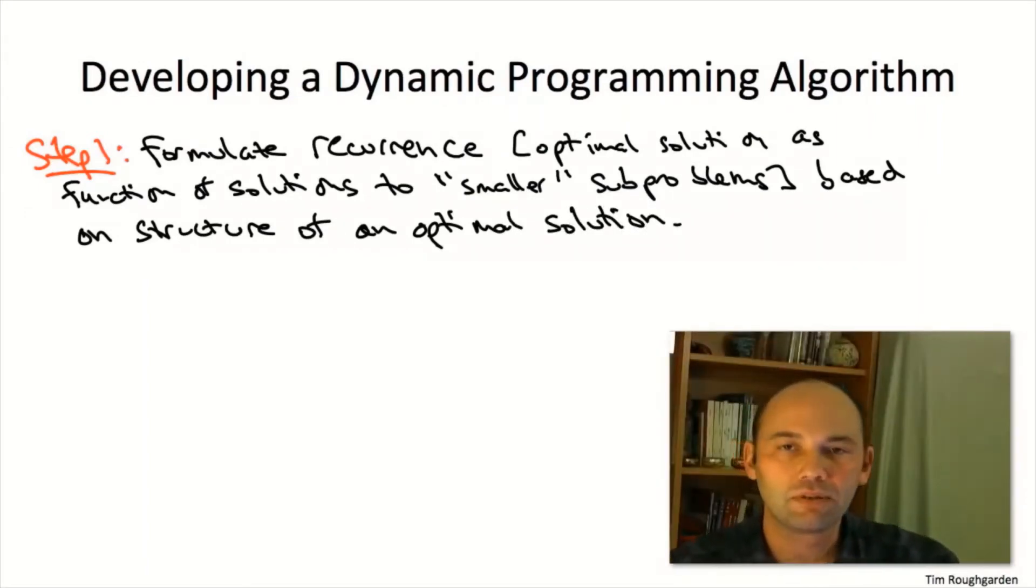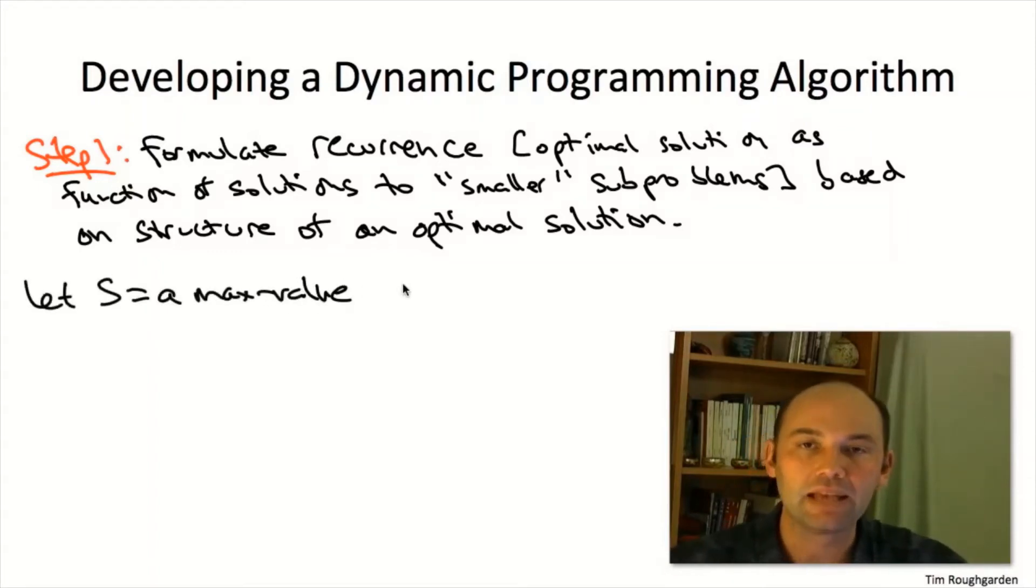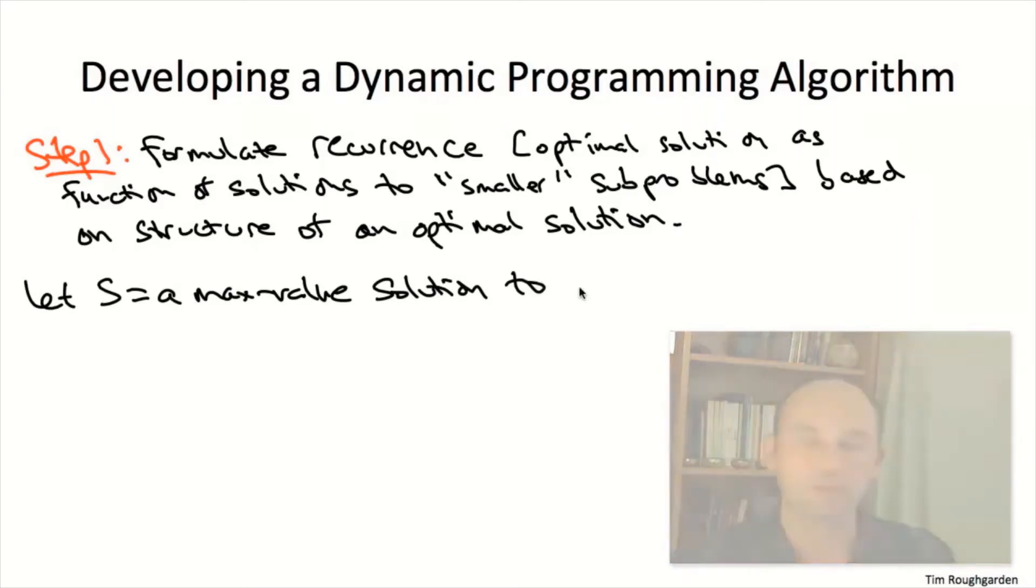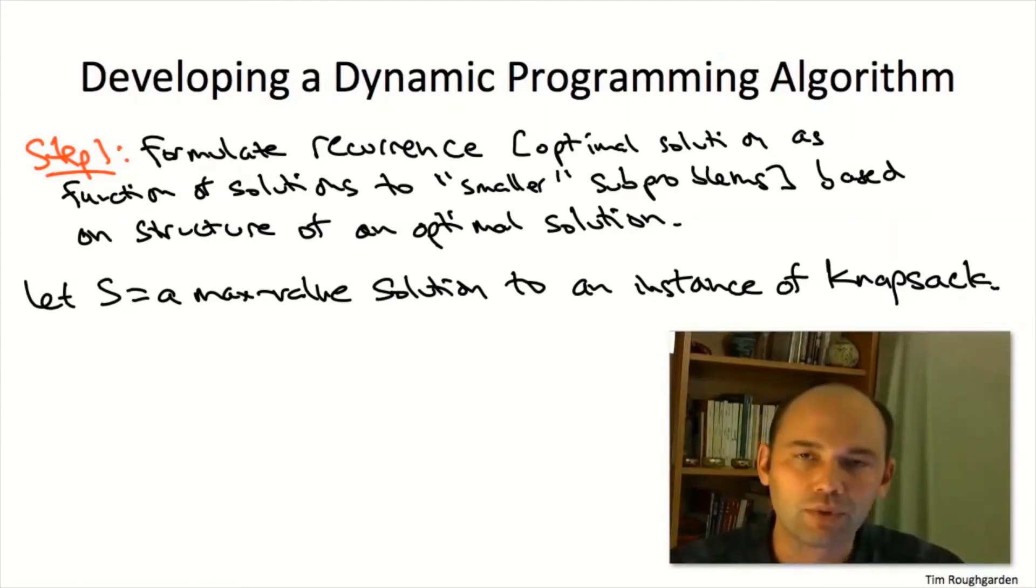To begin the thought experiment, fix an instance of knapsack and let S denote an optimal solution. We began our previous thought experiment with the content-free statement that the final vertex of a path is either in the optimal solution or it's not. What is the analog of the rightmost vertex in this knapsack problem? Unlike a path graph, there's no intrinsic sequentiality to the items, but it's useful to think of them as ordered 1, 2, 3, up to N. The content-free statement we're working with here is either the last item belongs to the optimal solution S or it doesn't.